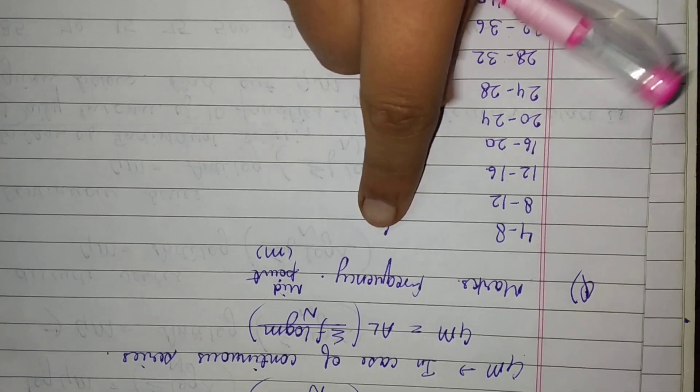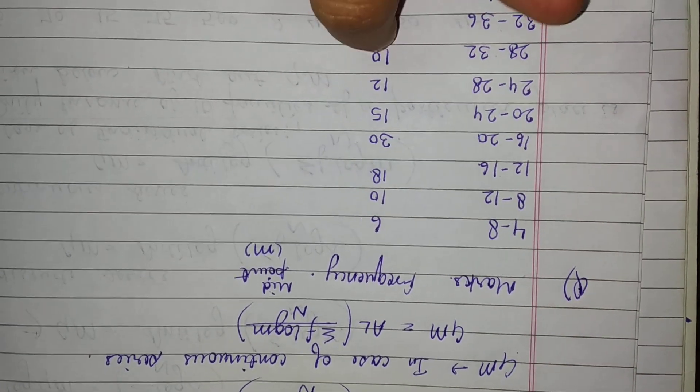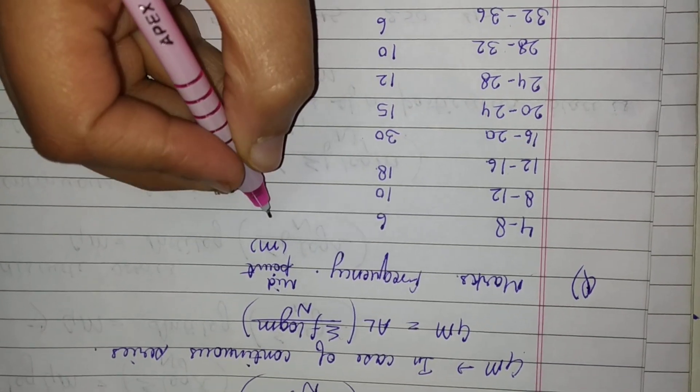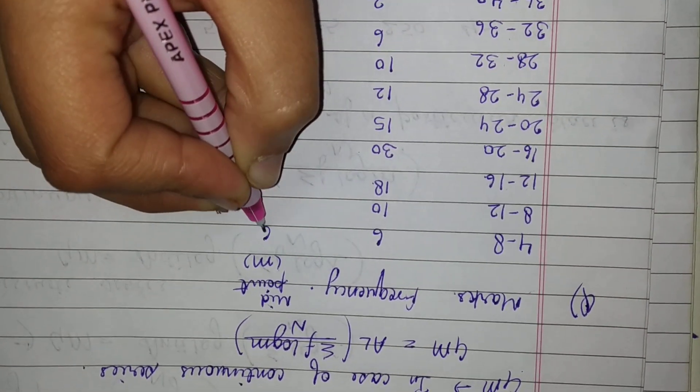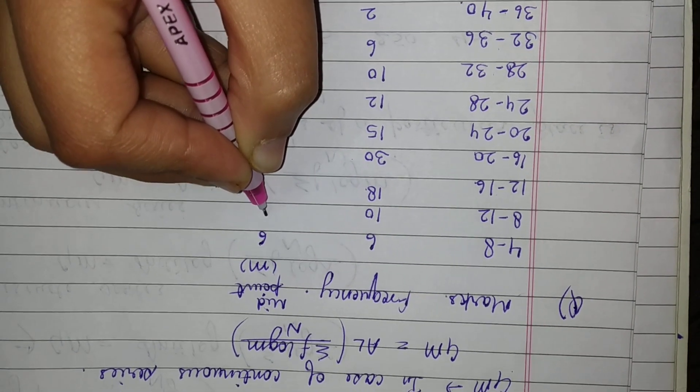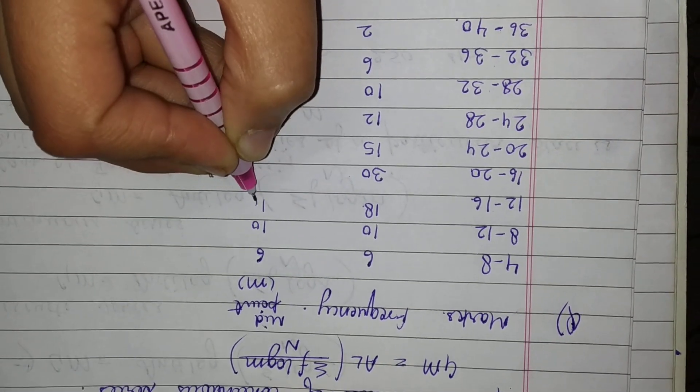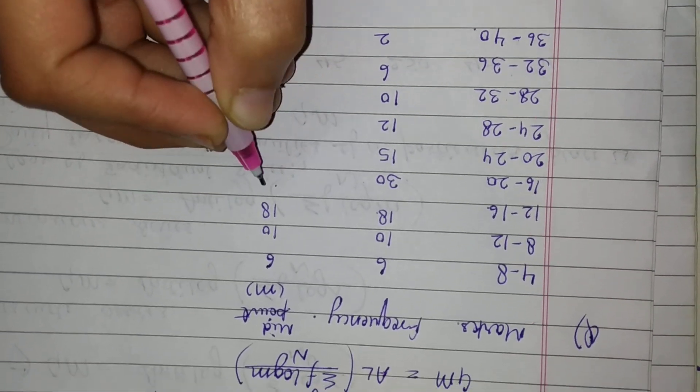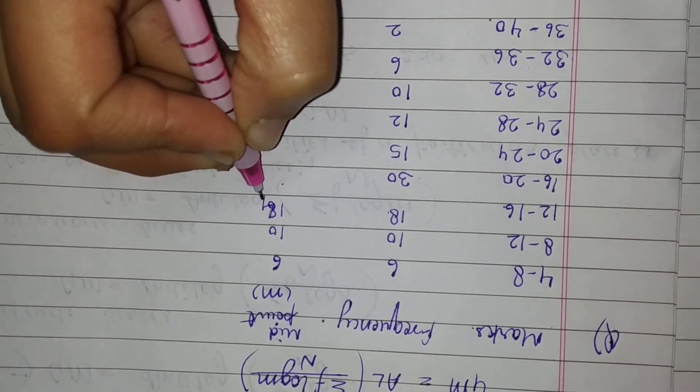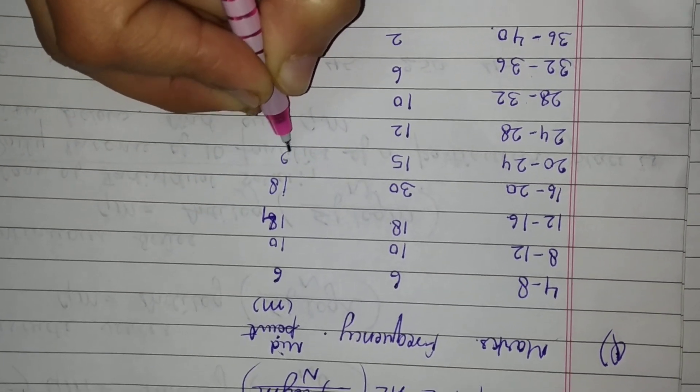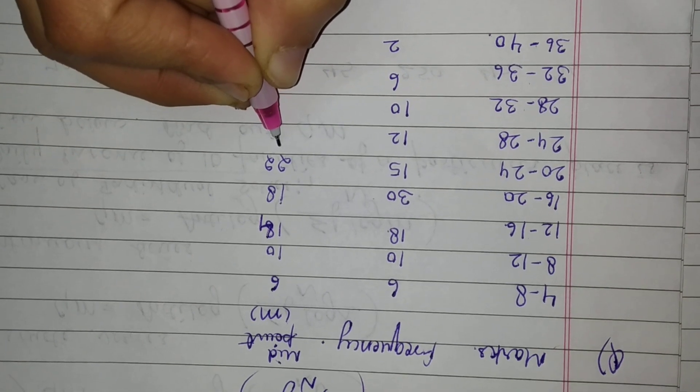12 divided by 2 is 6, so the midpoint is 6. Similarly we can obtain all midpoints: 6, 10, 14, 18, 22, 26, 30, 34, and 38.